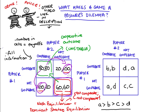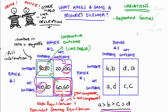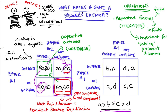Any game satisfying that abstract structure will give you these same outcomes. One important variation is when we allow for repeated interactions between players - either a finite or infinite number of times. This is called the iterated prisoner's dilemma. Iterated prisoner's dilemmas are really important when thinking about how to 'solve' the prisoner's dilemma - that is, how to get players to the cooperative outcome and make that outcome stable. Under certain circumstances, repeating the game can help make that happen.